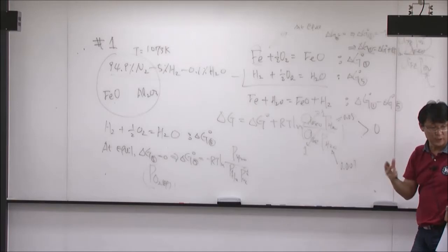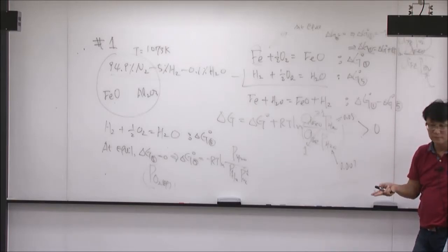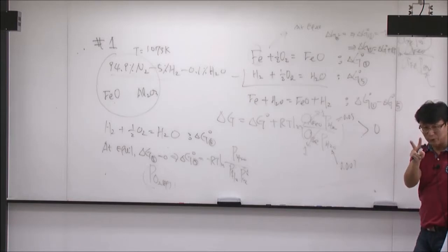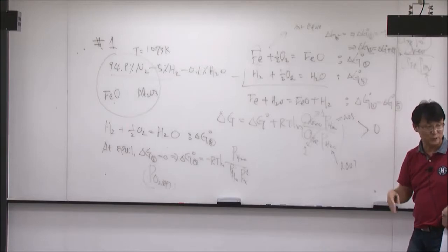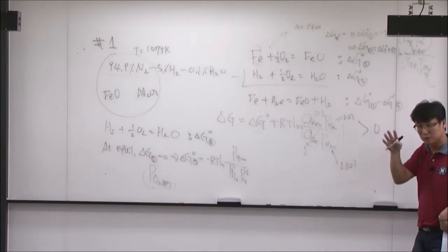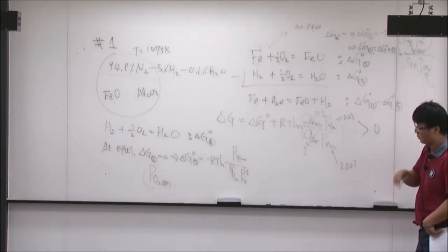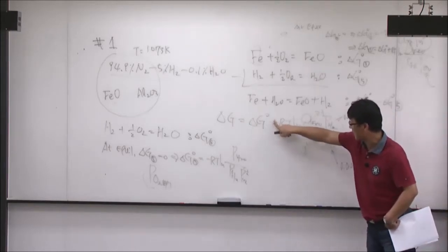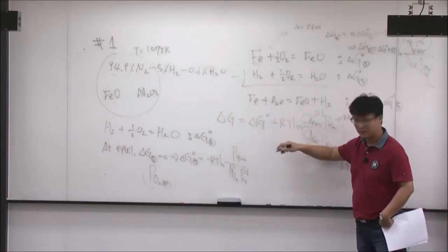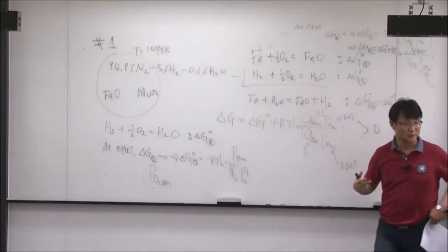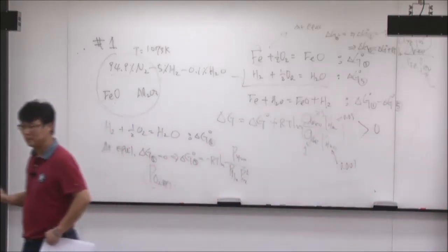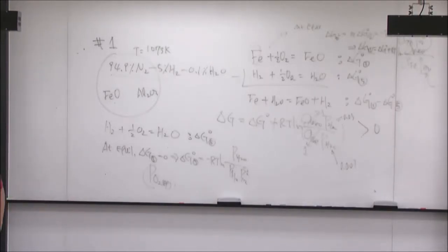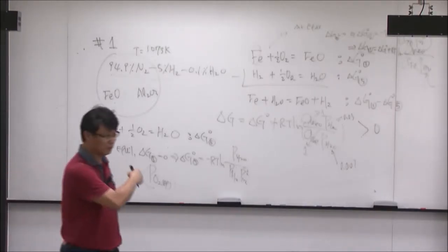Almost all of you — except for two students — were okay on the procedure, but somehow had a calculation mistake and lost a couple of points. But as I told you, there are two students who said delta G is negative. I took out points very seriously for that, because it's a very serious problem. Those two students probably lost more than 10 points just for that one mistake.